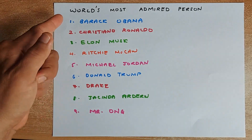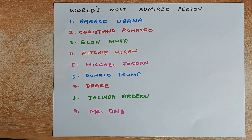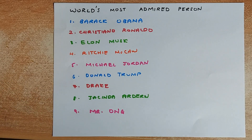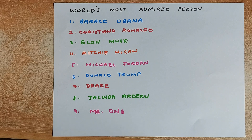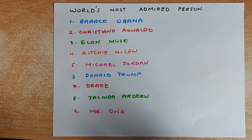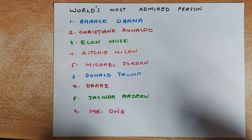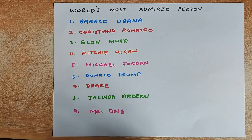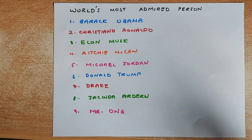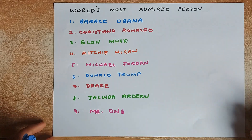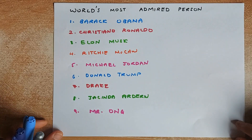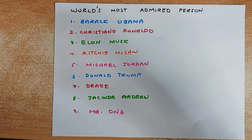First, you need to choose one of these numbers one to nine and decide who will be your most admired person in the world. For example, if you choose Elon Musk then you put a three; if you choose Donald Trump then you put a six. We're going to do some mathematics and I'm going to predict who your most admired person is. Do you agree? Let's go.